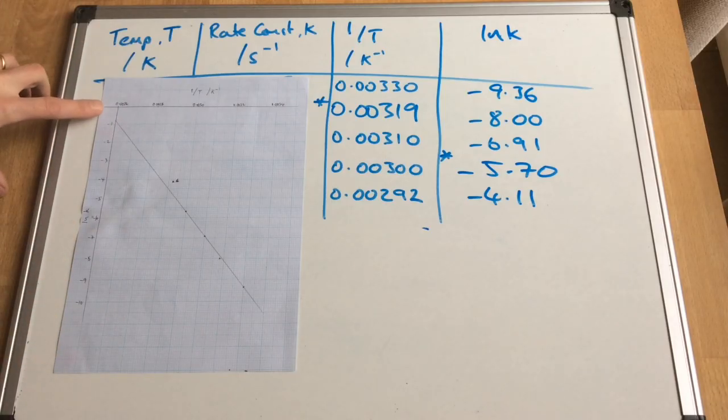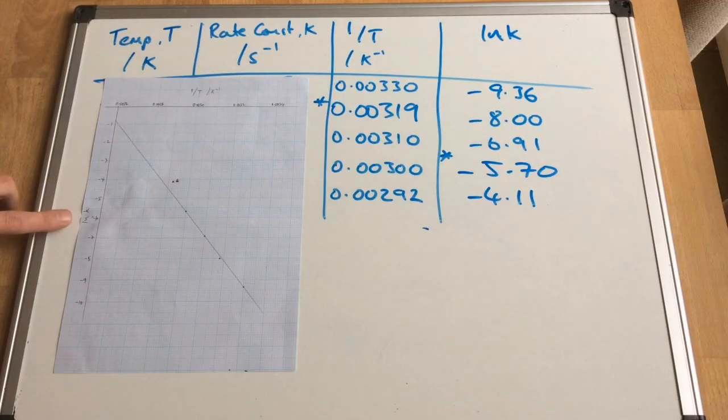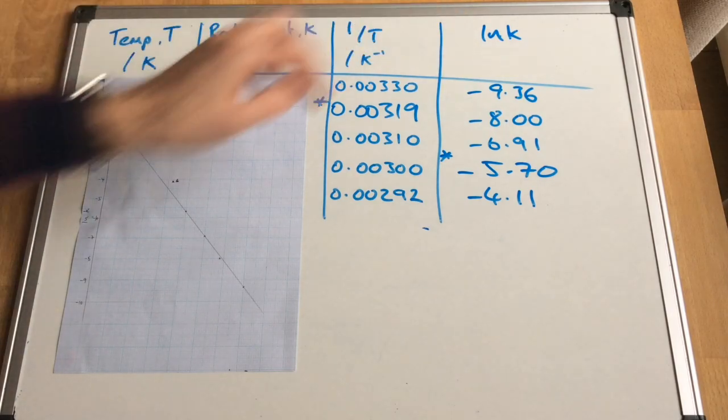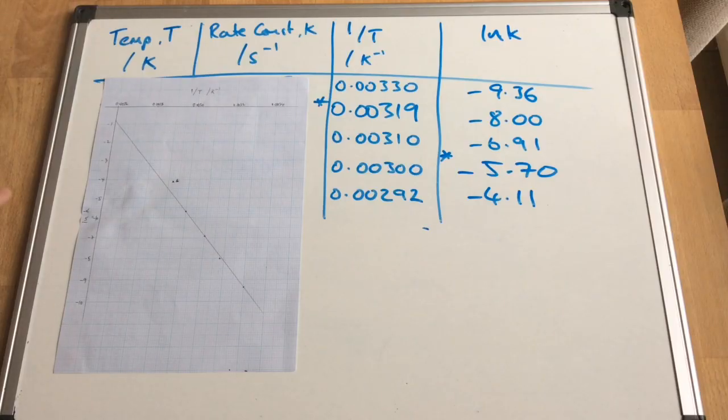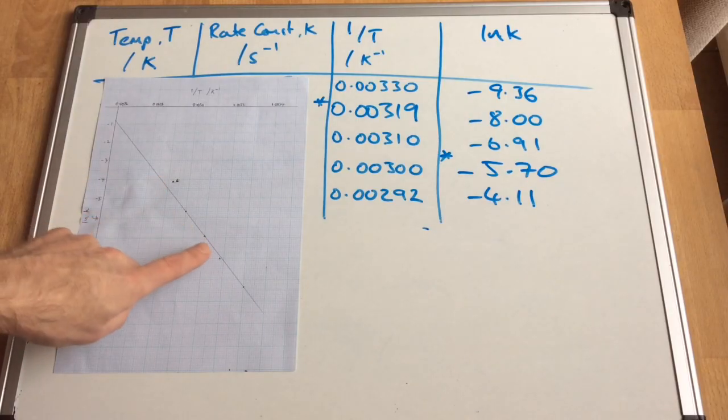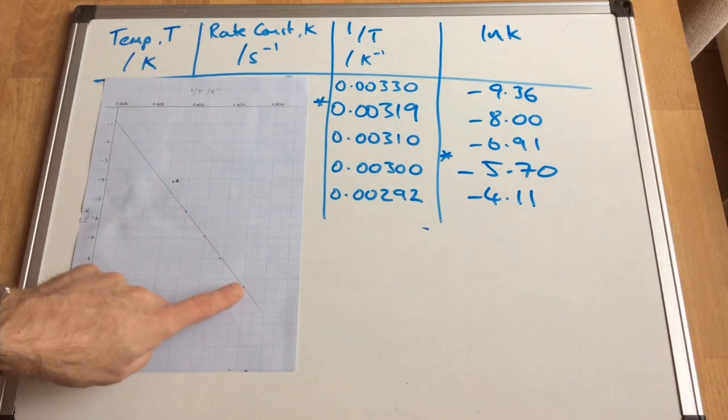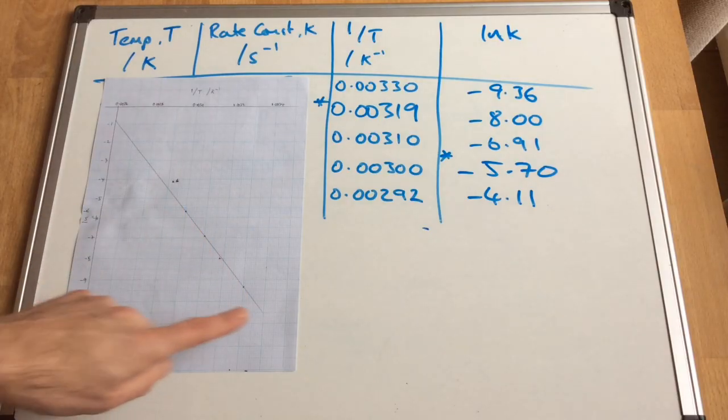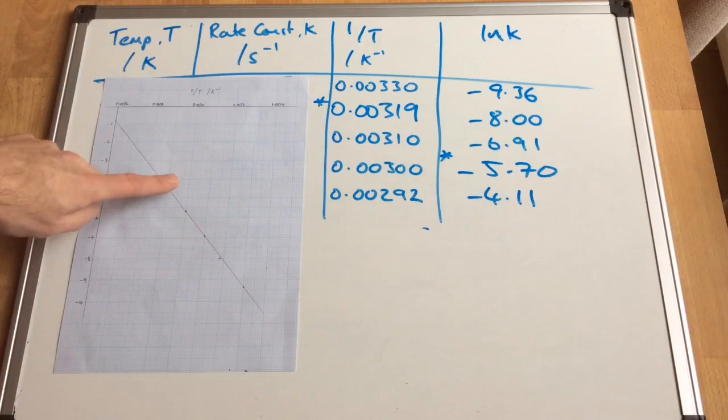My y-axis, I'm going from 0 to negative 10. Not forgetting labels, so I've got ln k on my y-axis, and 1 over T on my x-axis. And I've got the units there for 1 over T. Notice ln k, no units. So I've plotted my points, and you can see we've got one outlier there, or one rogue result there. The other four results are almost perfectly in line with each other.